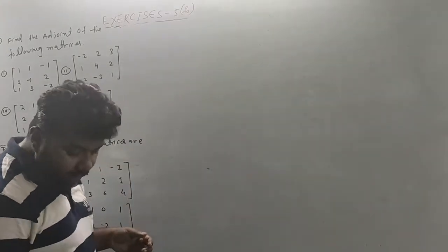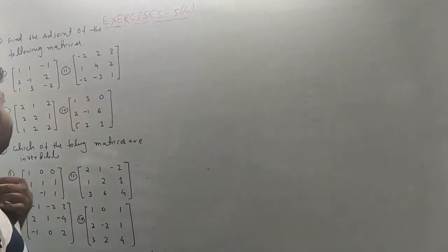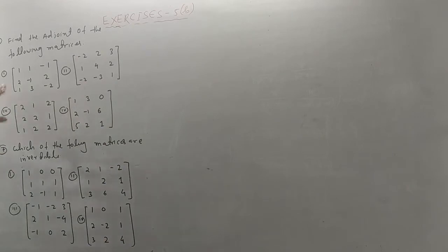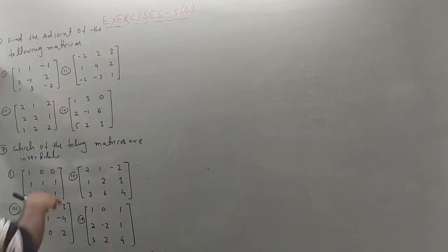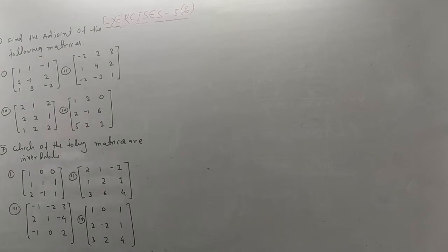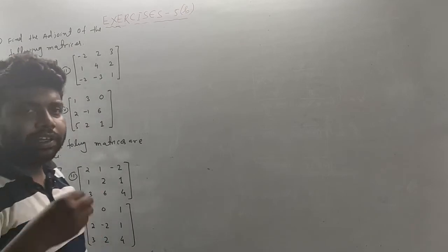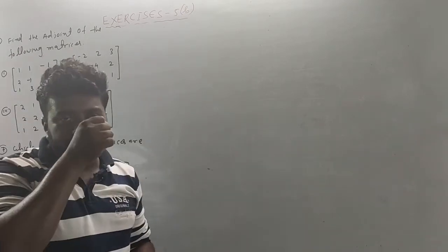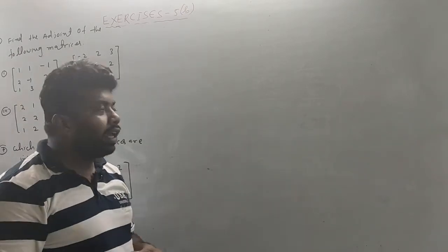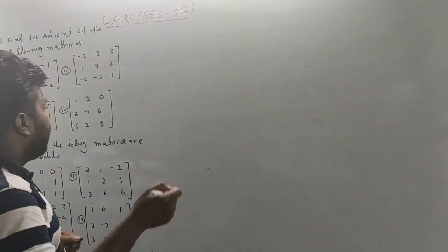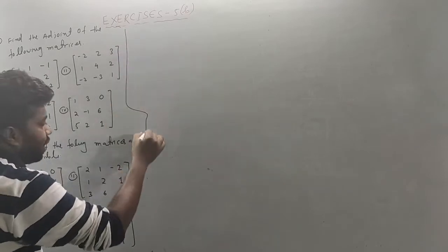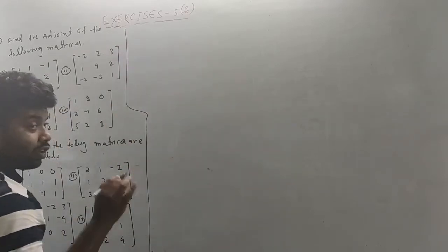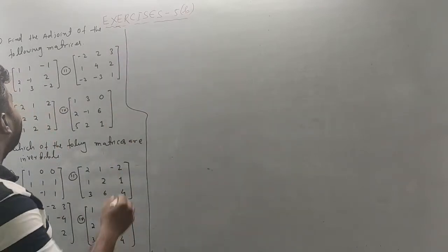So what is the first question? Number 6: find the adjoint of the matrix. So the next question is the same type of question. The process is the same.